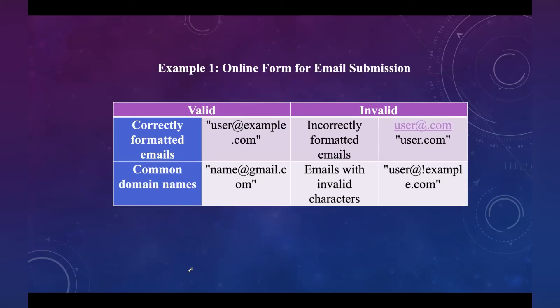Consider an online form for email submission. The valid equivalence class includes correctly formatted emails with valid domain names. The invalid equivalence class includes incorrectly formatted emails — for example, 'user@.com' or 'userdot.com' without the '@' symbol. Emails with invalid characters, such as an exclamation mark, also fall under the invalid class.